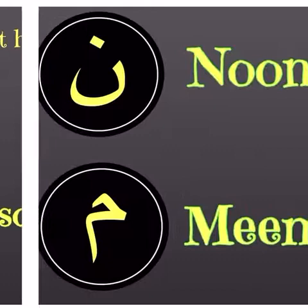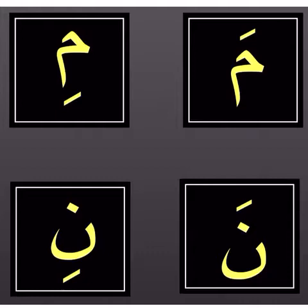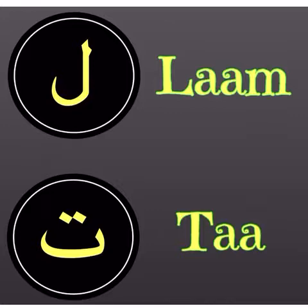Let's go to our two new letters: Noon and Meme. Now both of them do not have a sign. We need to put a sign on them, and when you put a sign it makes a sound. The meme with a fath will be read as 'ma'. The meme with a kasra will be read as 'mi'. The noon with a fath will be read as 'na'. The noon with a kasra will be read as 'ni'. One more time: ma, mi, na, ni.